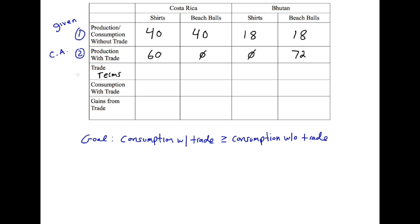Let's move on to row three, which I feel is giving students the most trouble. It's actually not that bad to figure out the trade terms, because what we're trying to do is reach our goal: we want consumption with trade to be greater than consumption without trade, so we need this row to be greater than our first row.